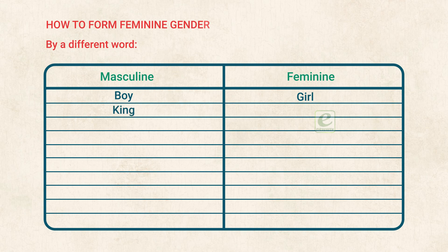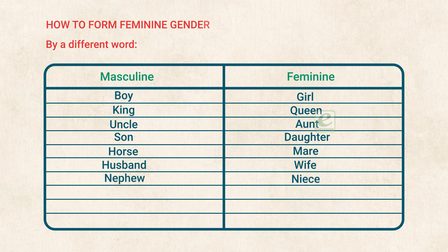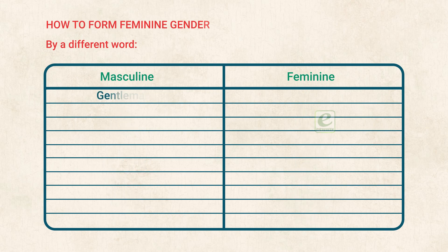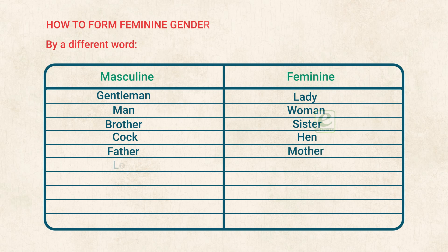Masculine / Feminine pairs: King / Queen, Uncle / Aunt, Son / Daughter, Horse / Mare, Husband / Wife, Nephew / Niece, Lad / Lass, Papa / Mama, Bull / Cow, Gentleman / Lady, Man / Woman, Brother / Sister, Cock / Hen, Father / Mother, Lord / Lady, Sir / Madam, Lion / Lioness, Stag / Hind.